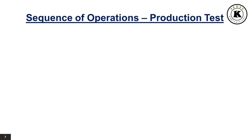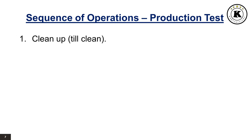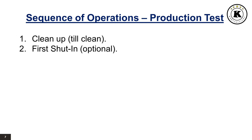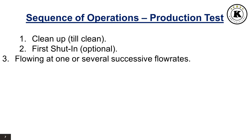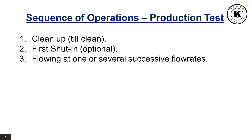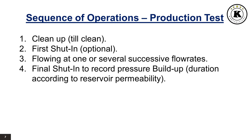Sequence of Operations — Production Test. 1. Clean up, till clean. 2. First shut-in, optional. 3. Flowing at one or several successive flow rates. 4. Final shut-in to record pressure buildup, duration according to reservoir permeability.